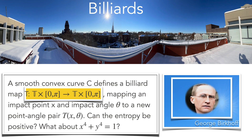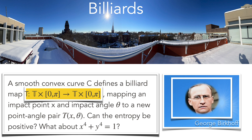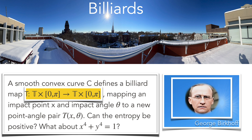Billiards in a convex table is called Birkhoff billiard. No example of a smooth table with positive metric entropy has been found yet. A candidate is the L4 table, x to the 4 plus y to the 4 equal to 1. You will see in the next slide some orbits for the L3 table, x to the 3 plus y to the 3 equal to 1, and then see how the phase space changes from the integrable circle case p equal to 2 to p equal to 4.